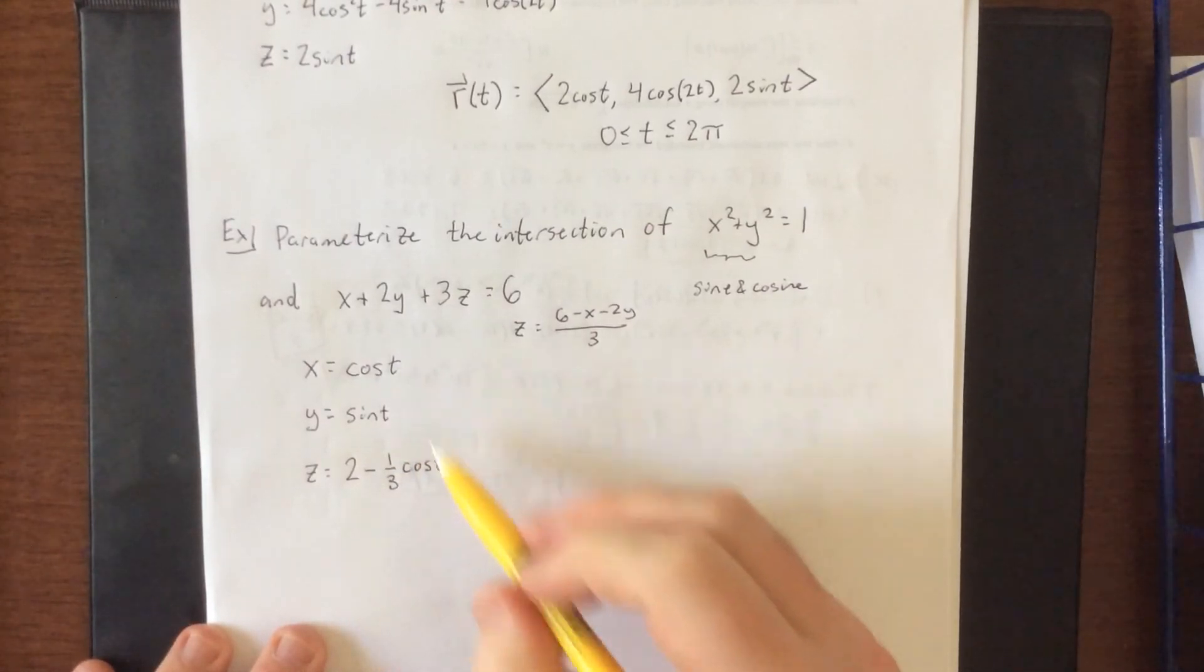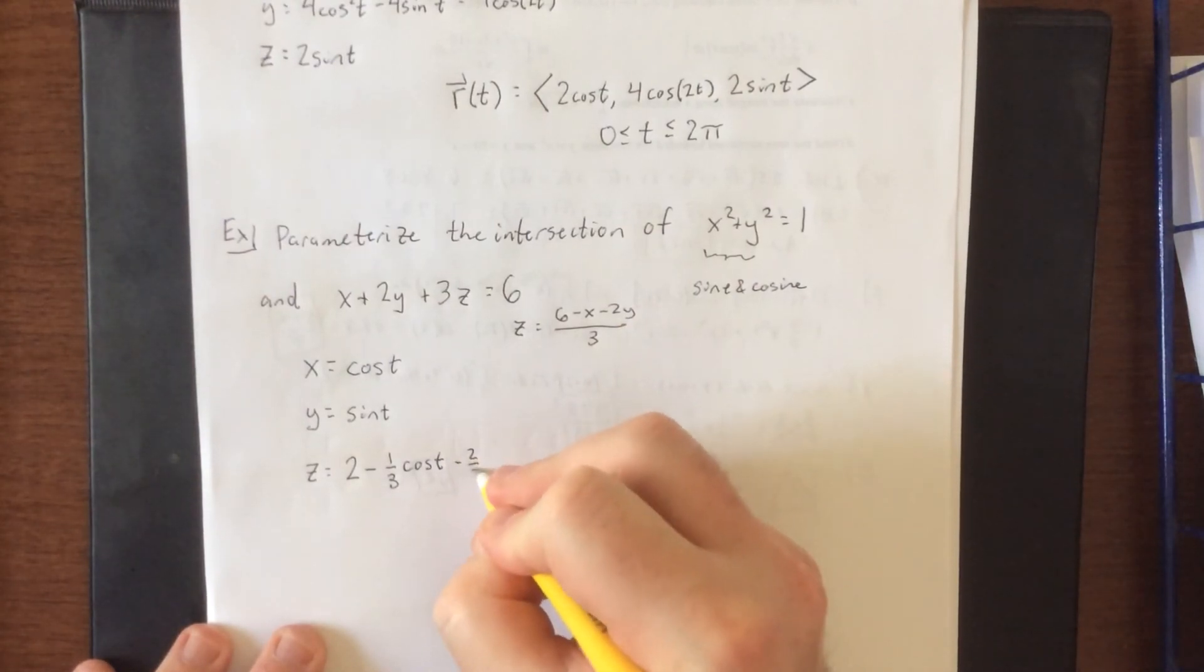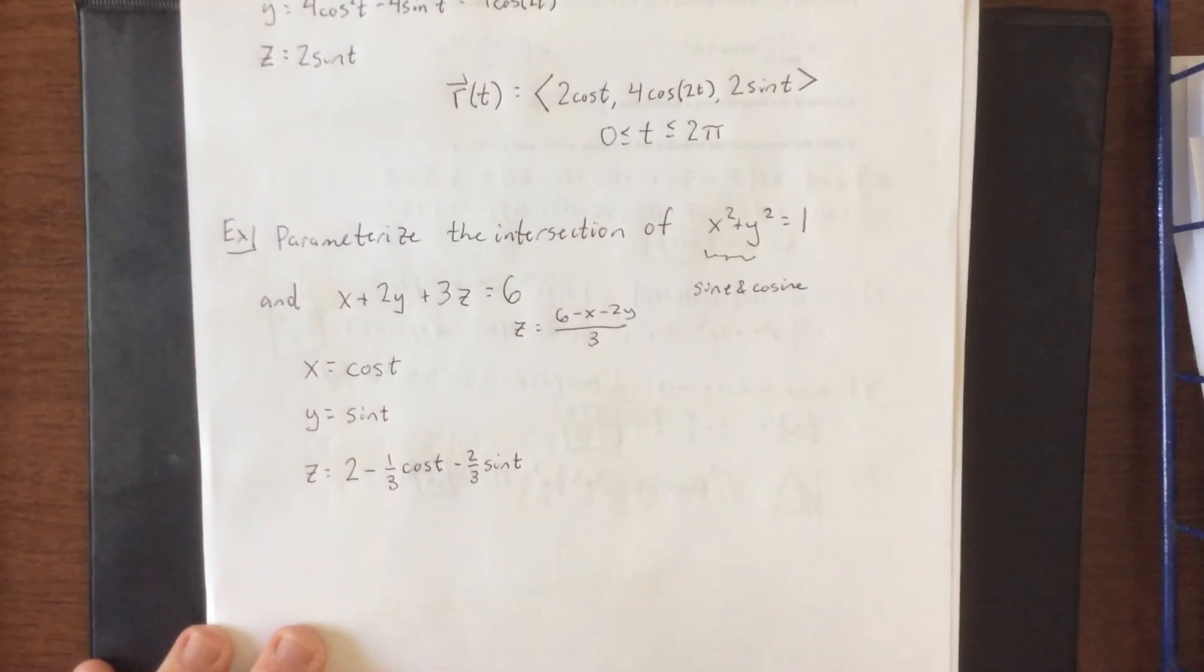The parameterization that we have for x is the cosine of t. And then minus 2 thirds times y. The parameterization that we have for y is 2 thirds sine of t.